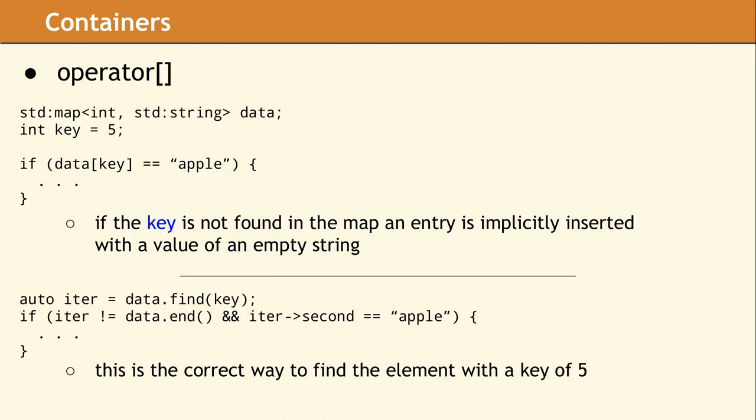You really need to know the semantics of the methods your containers provide. For example, the behavior of operator[] in the STL map container is a little bit surprising. If you look up an element using operator[] in an STL map and the key does not exist in the container, an entry with that key and a default-constructed value will be placed in the map implicitly. This example code will insert an entry with a key of 5 and an empty string as the value if no element with a key of 5 already exists in the map. If all you want to do is look up a particular entry by key without causing any side effects, you have to use find, not operator[].